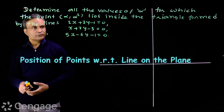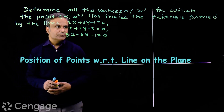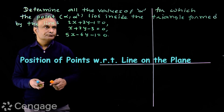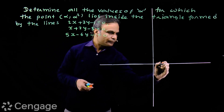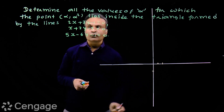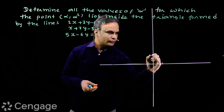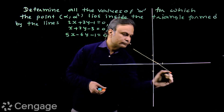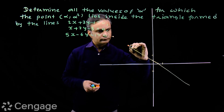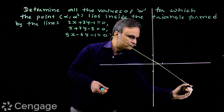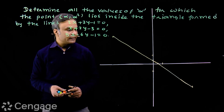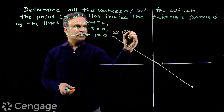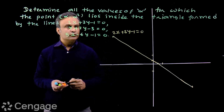To solve this question, we draw these lines on the coordinate plane. For the first line, the x-intercept is 1/2 and the y-intercept is 1/3. We draw this line carefully. This is 2x + 3y - 1 = 0.